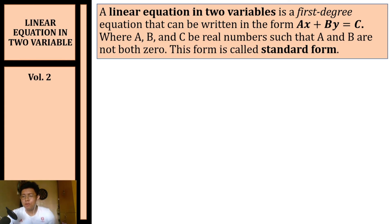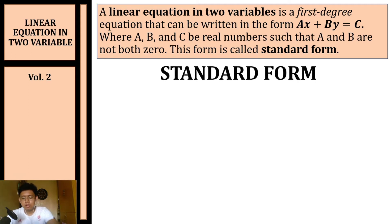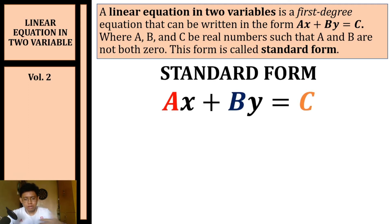A linear equation in two variables is a first-degree equation that can be written in the form ax plus by is equal to c, where a, b, and c are real numbers such that a and b are not both zero. This form is called the standard form.